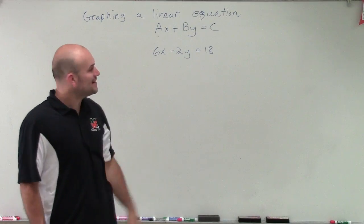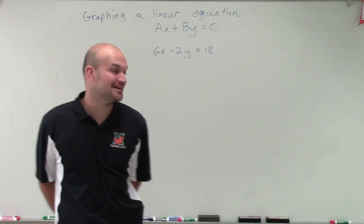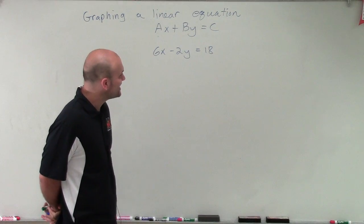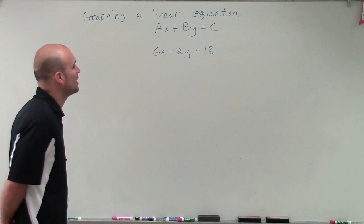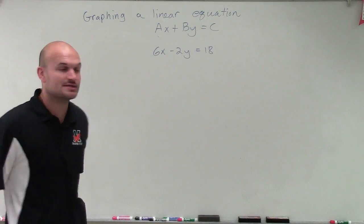So anyways, we have 6x minus 2y equals 18. So what we're going to do is solve this by using our x and y intercepts rather than converting to slope-intercept form.